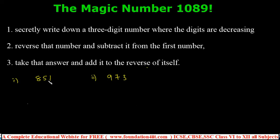Reverse 851 to get 158. Reverse 973 to get 379. This is the second step. Let them write any three-digit number in decreasing order, then reverse the number and subtract.